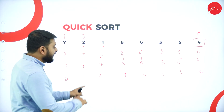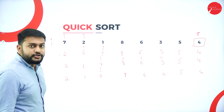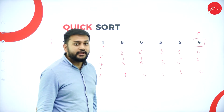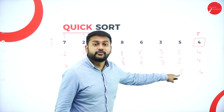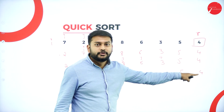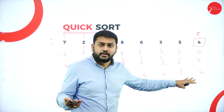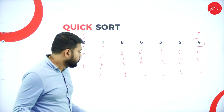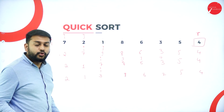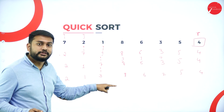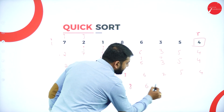J moves to the next element. Observe — J now points to five. Five is greater than four, so I don't have to swap. I have now reached the last element, which is the pivot. Now, what do I do? I place the pivot (four) at position I plus one. After placing, the array becomes: 2, 1, 3, 4, 8, 6, 7, 5.